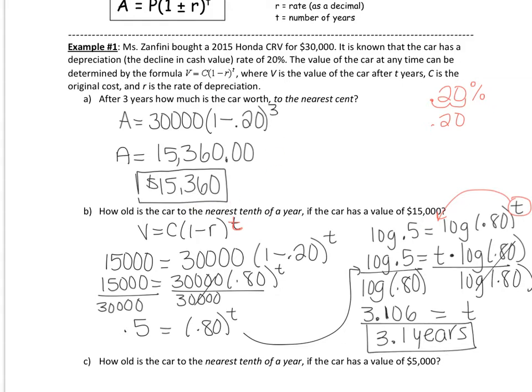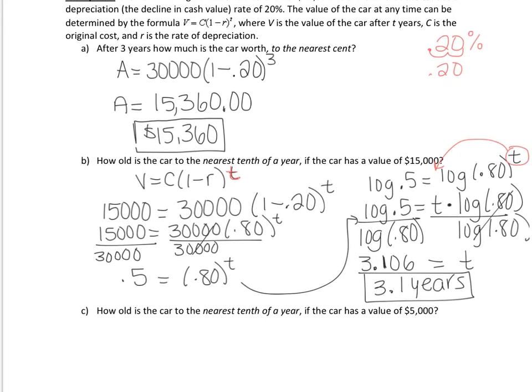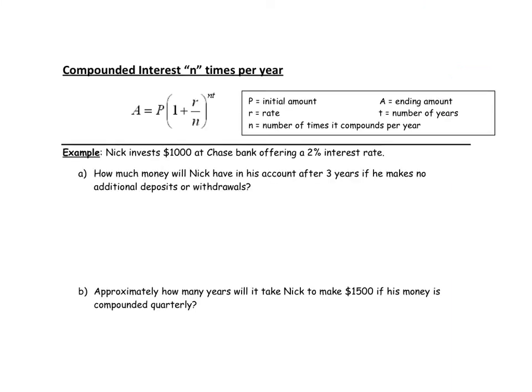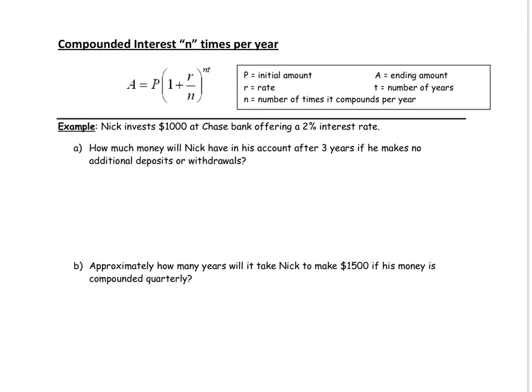For homework, do part C — I will not give you credit unless this one is done. Model it the same exact way as part B. Now I'm going to move on to the next page. We're going to do the same type of problems but using a different formula where compounding is n times per year. Example: Nick invests $1,000 at Chase Bank offering a 2% interest rate. How much money will Nick have in his account after three years if he makes no additional withdrawals or deposits?